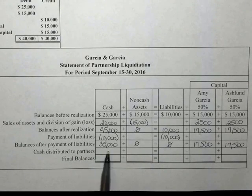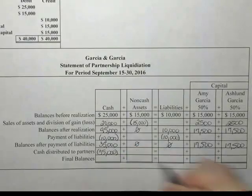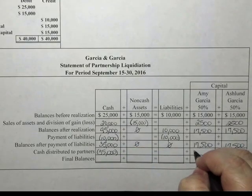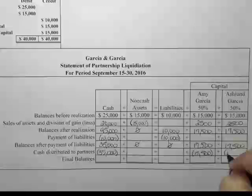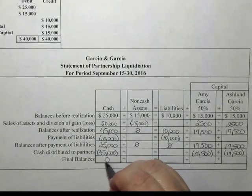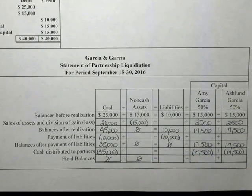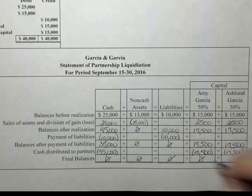The next step is to distribute the remaining cash to the partners. We are going to take this $35,000 and split it 50-50 with Amy and Ashland. We are going to pay Amy her $17,500. That leaves us with zero cash, zero non-cash assets, zero liabilities. Amy Garcia has been paid out her capital balance of $17,500, and her capital balance after the cash distribution is zero.